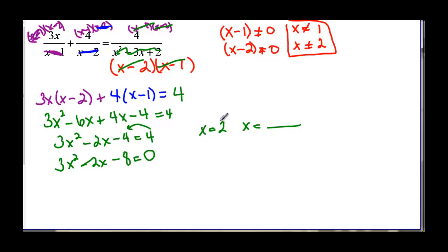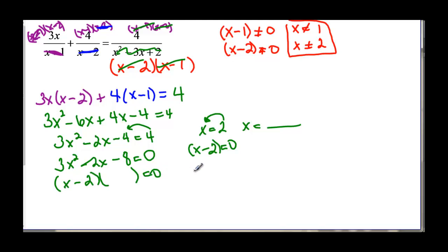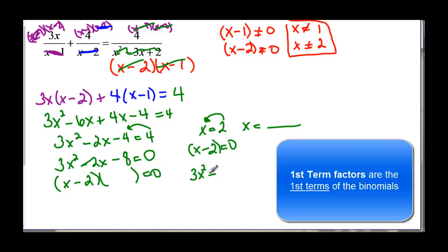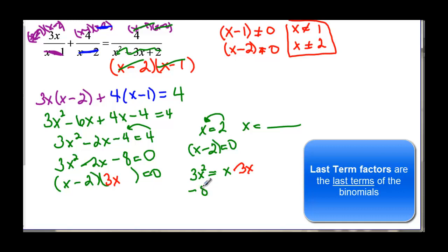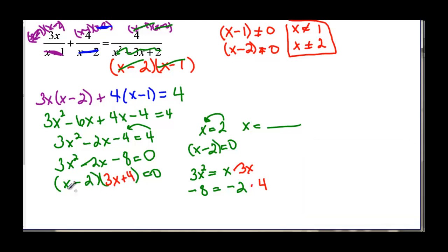If you take x equals two back over to factor it, subtract two from both sides to get x minus two equals zero — that's one factor. To find the other factor, the first terms must multiply to three x squared, so I need three x. The last terms must multiply to negative eight: I have negative two, and negative two times positive four gives negative eight. So the two factors are x minus two and three x plus four.